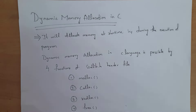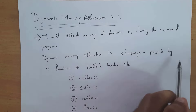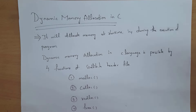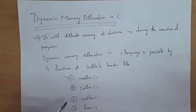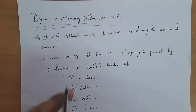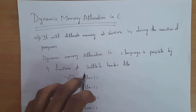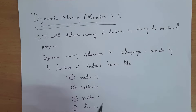By using dynamic memory allocation we can allocate memory at runtime, that is during the execution of a program. Dynamic memory allocation in C is possible by four functions. They are: first is malloc, second is calloc, third is realloc, and fourth is free. These four functions are present in the stdlib.h header file — the standard library header file.